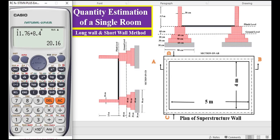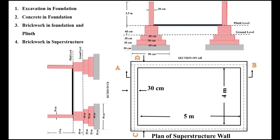Hi, I am Engineer Shahzad Khan. In the previous video we discussed the quantity estimation of a single room using the long wall and short wall method — the link to that video is in the description below. In this video, the quantity estimation of the same plan of a single room having an internal length of 5 meters and width of 4 meters using the centerline method is discussed.